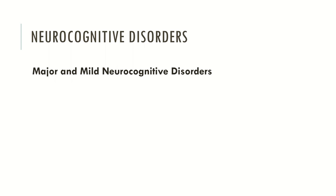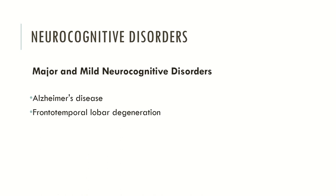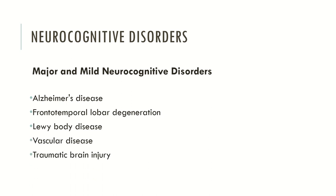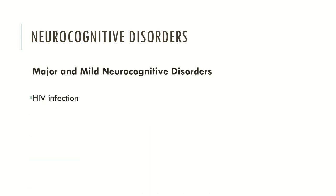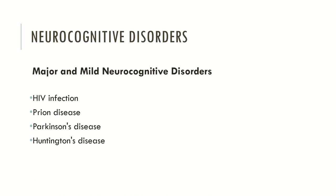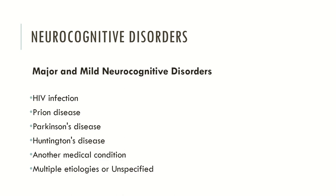Now let's look at the major and mild neurocognitive disorders. The first etiology is Alzheimer's disease, followed by frontotemporal disease, Lewy body disease, vascular disease, traumatic brain injury, substance or medication use, HIV/AIDS infection, prion disease, Parkinson's disease, Huntington's disease, another medical condition, and multiple etiologies or unspecified.